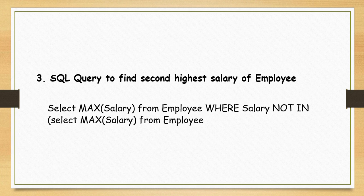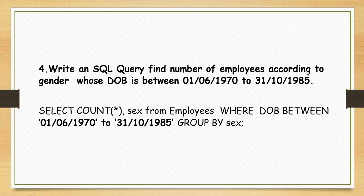The next question is: write an SQL query to find the number of employees according to gender whose date of birth is between a specified range. The query looks like this: SELECT COUNT(*), sex FROM employee WHERE date_of_birth BETWEEN [from_date] AND [to_date] GROUP BY sex. This is the query to find the number of employees according to gender whose date of birth falls within the given range.